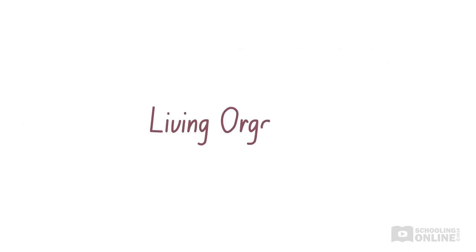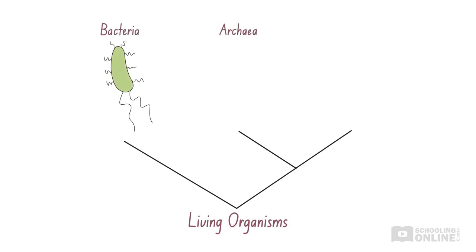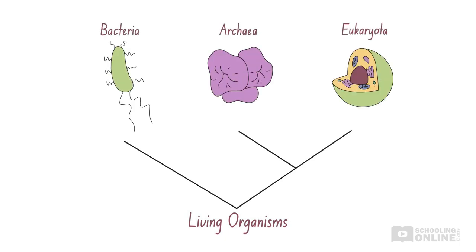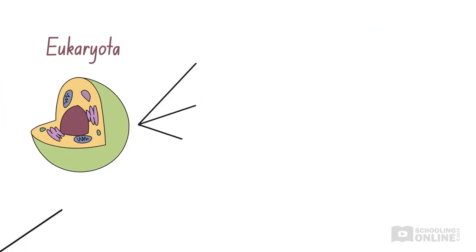Living organisms can be classified under three domains or groups: bacteria, archaea, and eukaryota. Eukaryota, or eukaryotes, can be split into four kingdoms, including protists, fungi, plants, and animals.